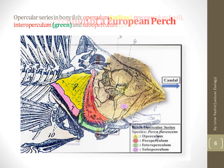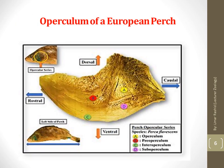This slide shows the operculum of a European perch, displayed in four colors with bone segments labeled a, b, c, and d. 'A' is the operculum, 'b' is the pre-operculum, 'c' is the inter-operculum, and 'd' is the sub-operculum. The four sides shown are: dorsal (above), caudal/tail side (right), rostral side (toward the mouth), and ventral (below).